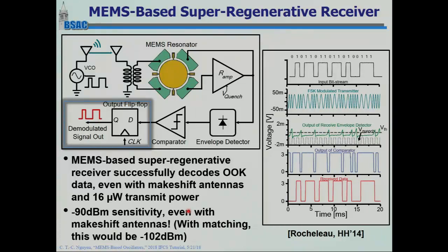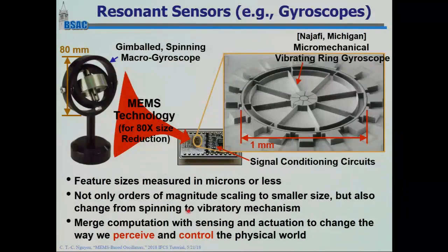Power is where MEMS has the biggest advantage. With oven-controlled oscillators, you can achieve temperature control with much less power using MEMS. To get a certain phase noise, you can also do it with much less power in MEMS. Resonant sensors are also a big thing for MEMS-based technology — things like gyroscopes. When you're able to get resonators together with electronics through a two-chip solution or fully integrated, this is also a huge application for MEMS-based oscillators.